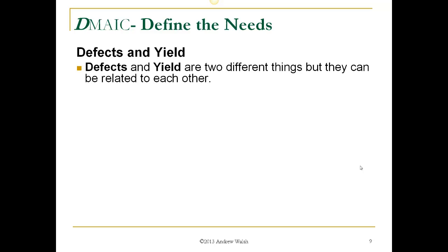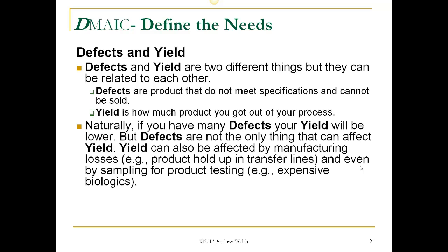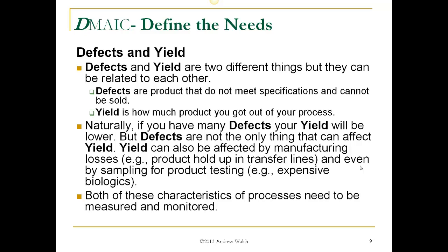Defects and yield are two different things, but they can be related to each other. Defects are products that do not meet specifications and cannot be sold. Yield is how much product you get out of your process. If you have many defects, your yield will be low, but defects are not the only thing that can affect yield. Yield can also be affected by manufacturing losses — just moving things around causes losses — or product hold-up in transfer lines that gets washed down the drain. Even sampling can affect yield; for biologics, which can cost a million dollars a gram, you don't want to use a liter for testing. Both of these characteristics need to be measured and monitored.